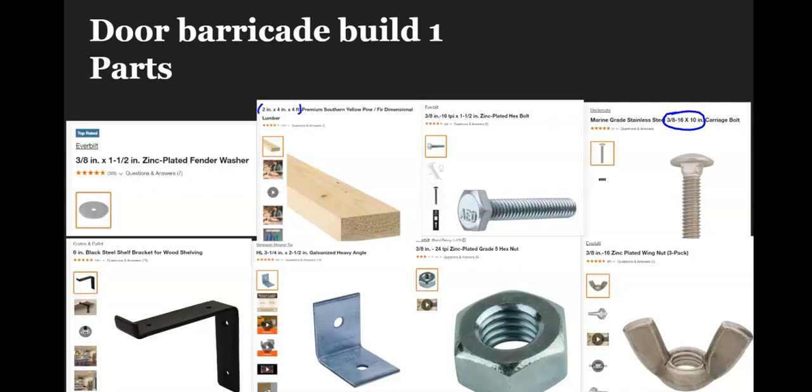These are the parts that you need for barricade one. The only thing you are going to need two of are two of these washers. One two-by-four-by-four board, one three-eighths hex bolt—I'd recommend getting one that's at least an inch and a half or two inches long—one three-eighths 10-inch carriage bolt, one three-eighths wing nut, one three-eighths hex bolt.